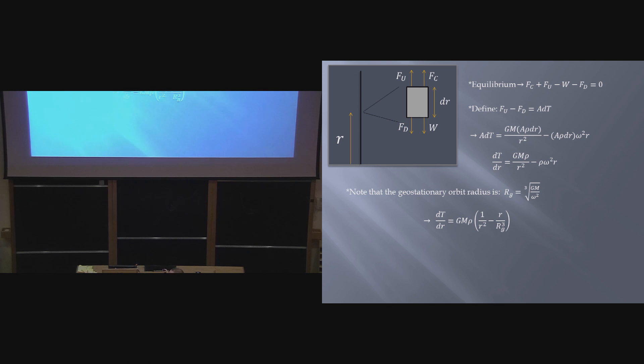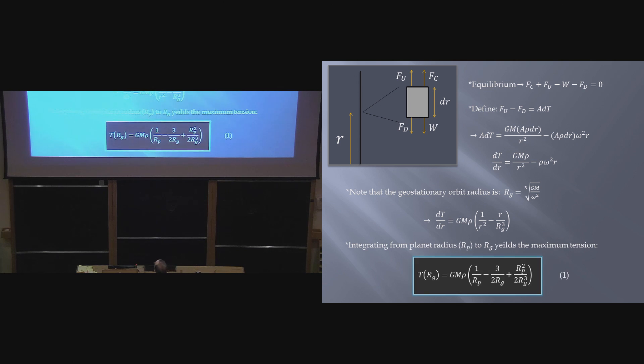And also, below geostationary orbit, because you're closer to the Earth, the weight is going to be greater than the centrifugal force, so dt is going to be positive below that point, so we're going to have a maximum point at geostationary orbit. So the idea is we're going to integrate this equation from the surface of our planet up to geostationary orbit, and that will then give us an answer for the maximum tension. And if you do that, this is the equation that we get.